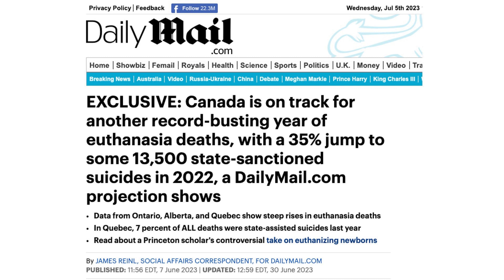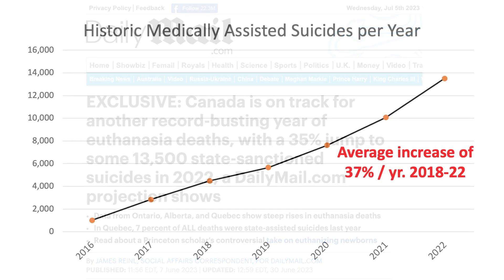In Quebec, 7% of all deaths in 2022 were state-assisted suicides. If we look at the historic growth rate of medically assisted suicides in Canada, it has grown from 1,018 in 2016 to an estimated 13,500 in 2022. For the past five consecutive years, it has increased at an average rate of 37% per year.